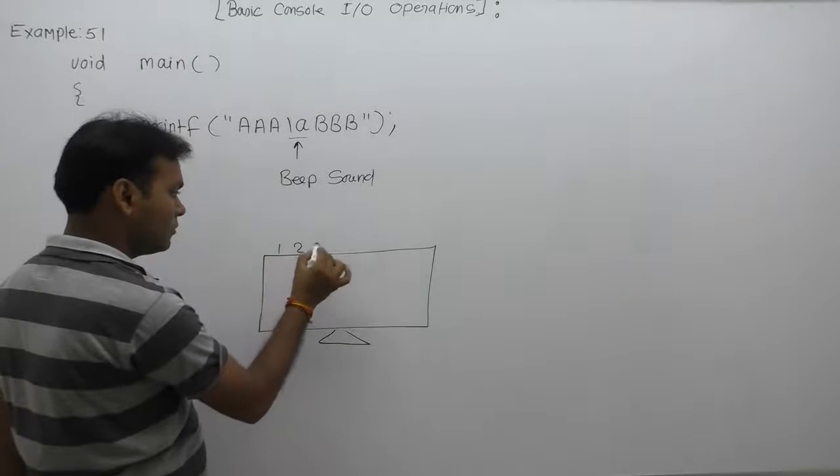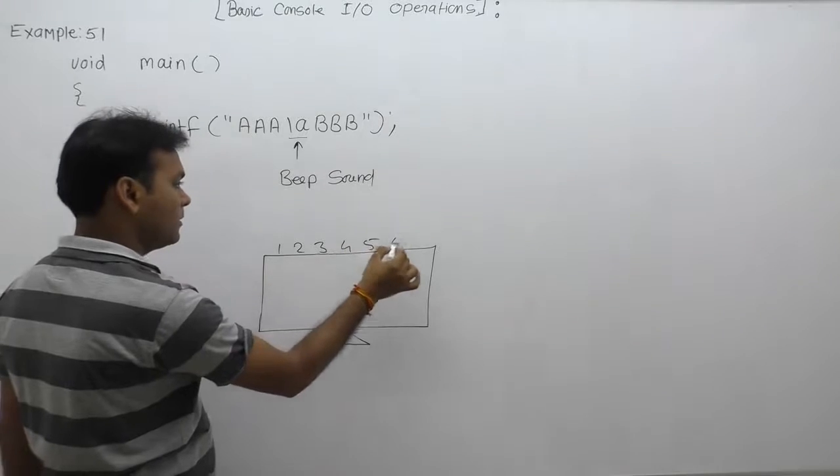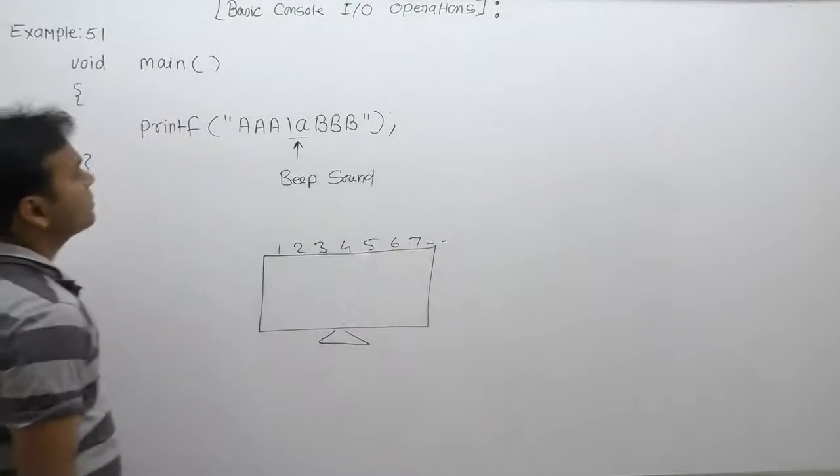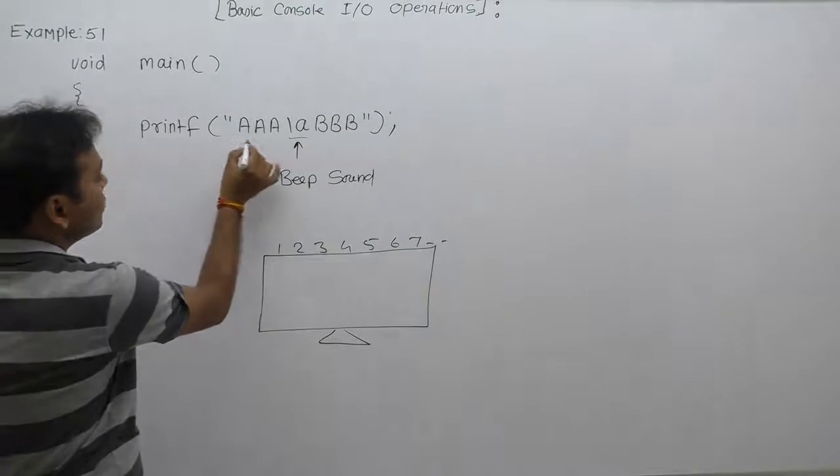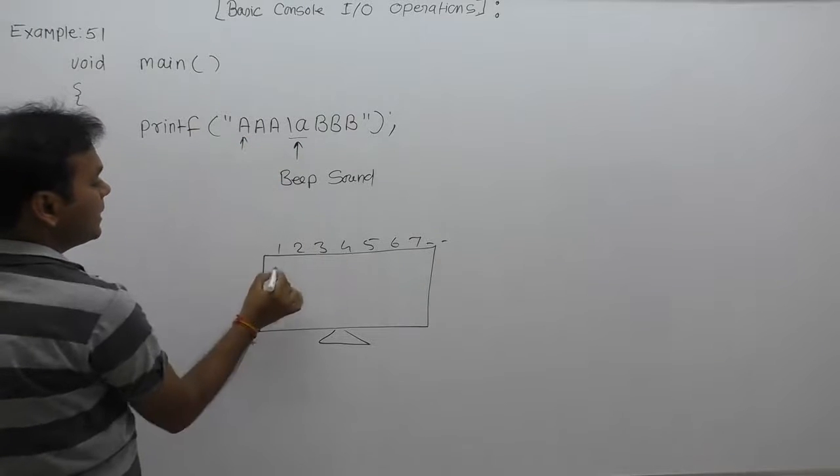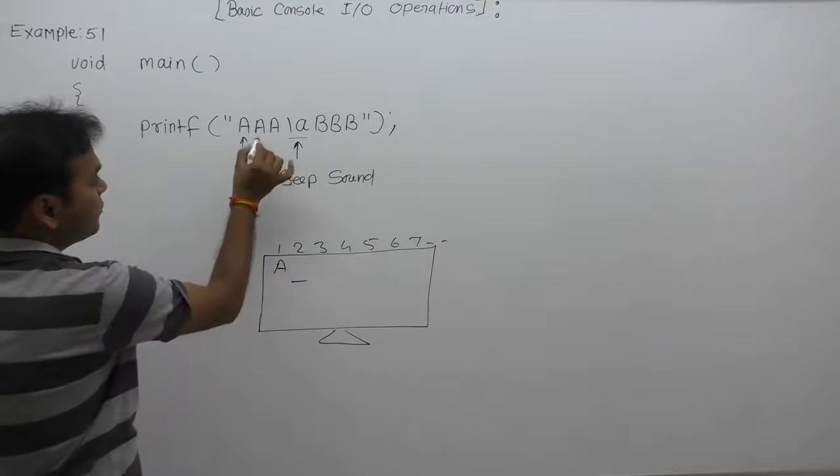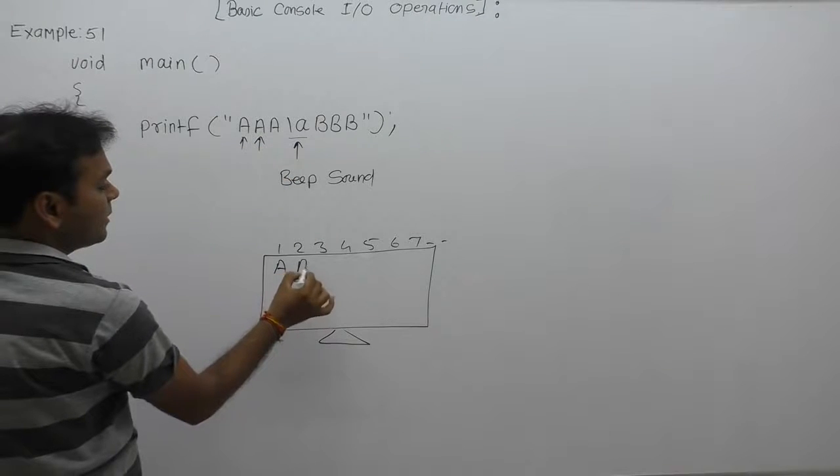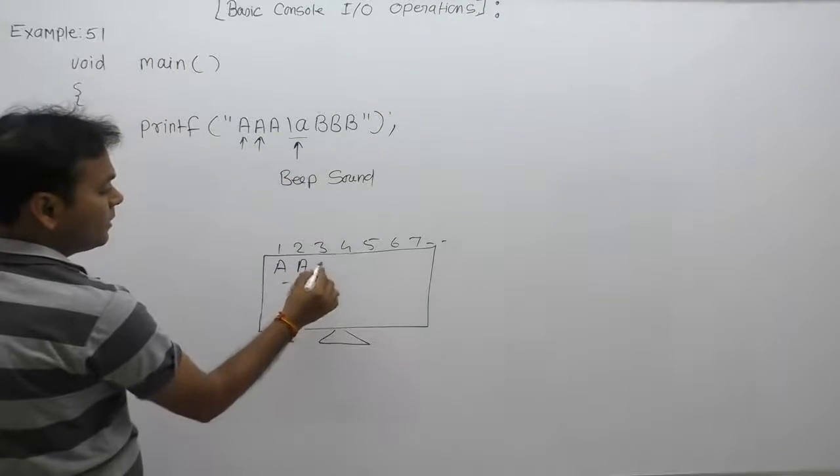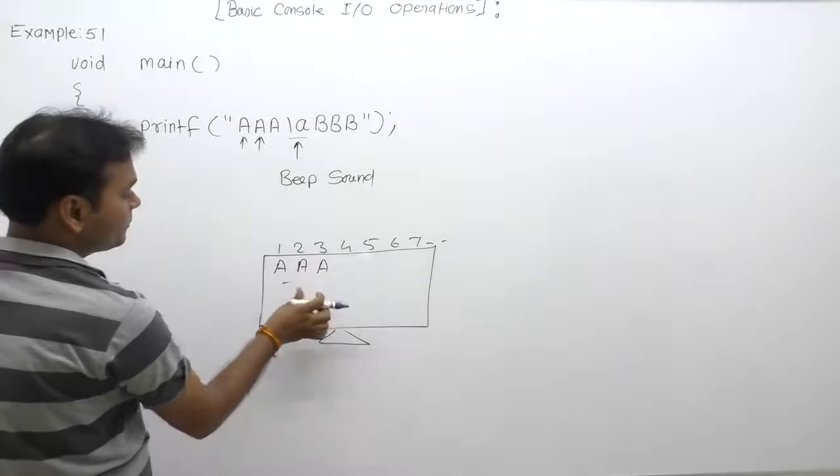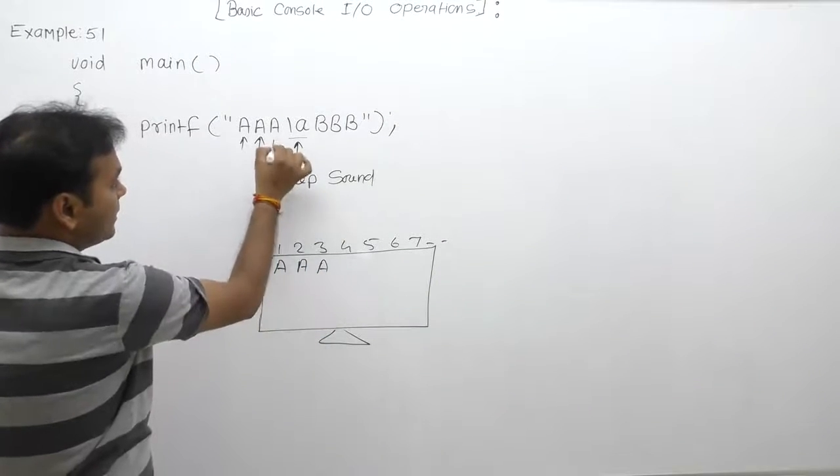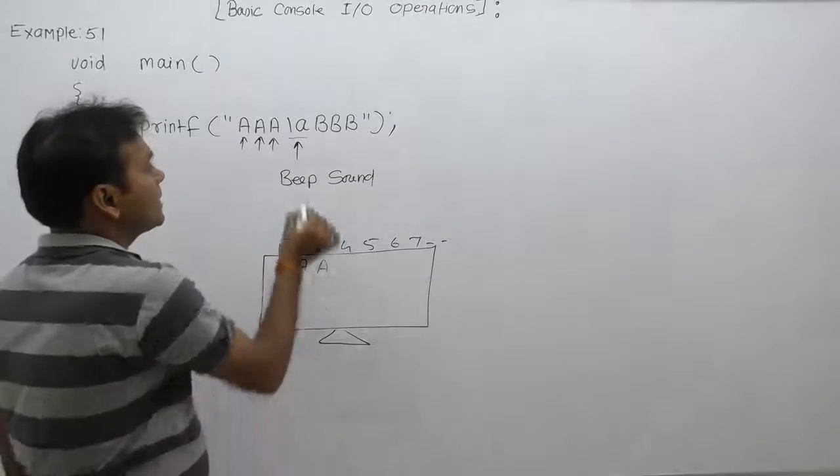In this case, position 1, 2, 3, 4, 5, 6, 7, and so on. First of all, whenever this printf function is going to be executed, it will print 'a'. Again, the cursor will be available on the next position. Then again 'a', the cursor will be available on the next position. So finally, three 'a's are printed.